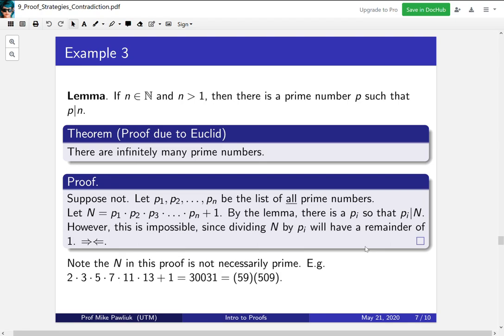So for example, if you take the product of the first six primes and add one, you get a number which is not prime. You should think about why that's the case.